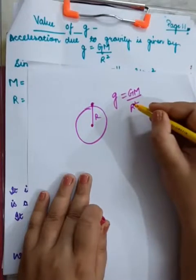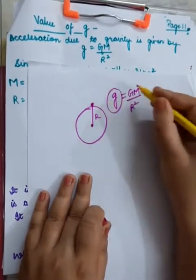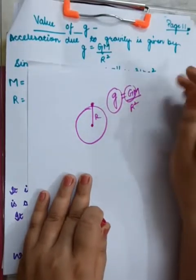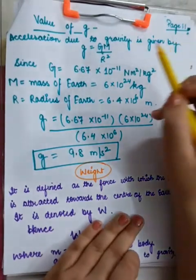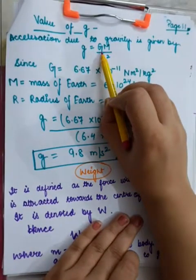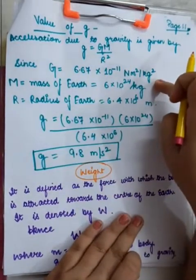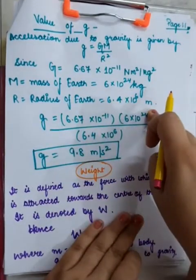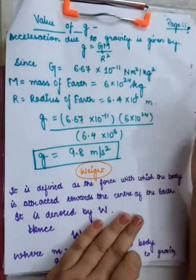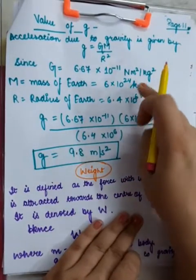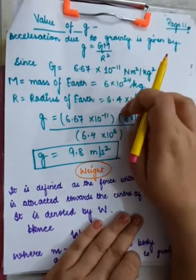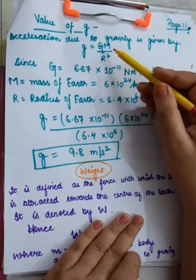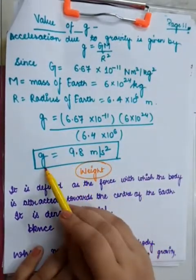In the last video I discussed the relationship between small g and capital G, where small g is acceleration due to gravity and capital G is the universal constant of gravitation. Capital R is the radius of Earth and capital M is the mass of Earth. When you substitute all these parameters and their values into this expression, what are you going to get?